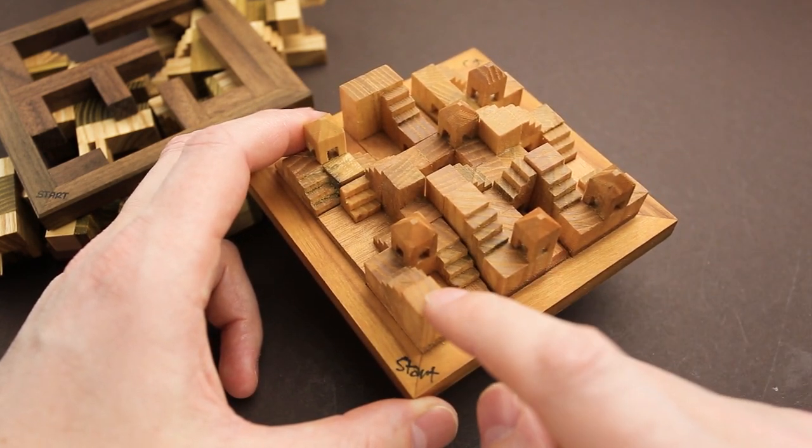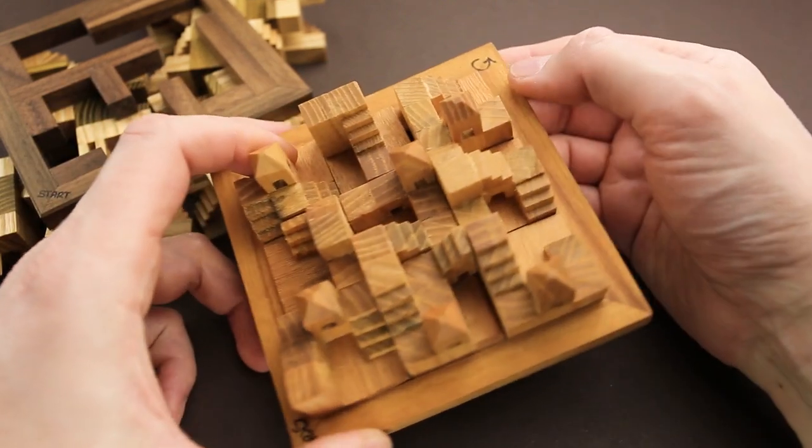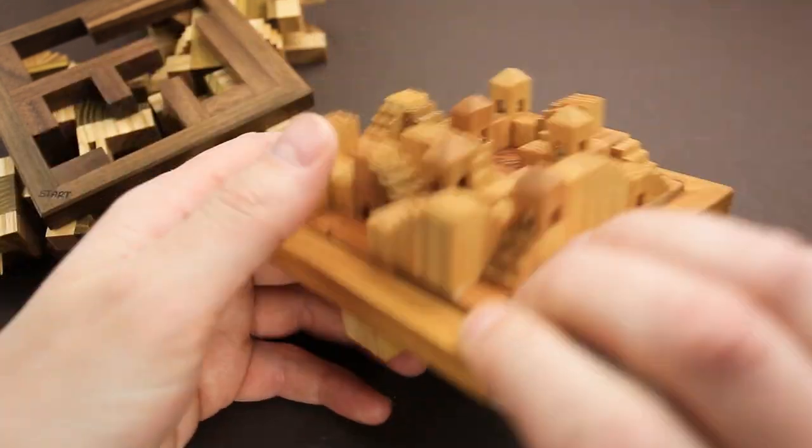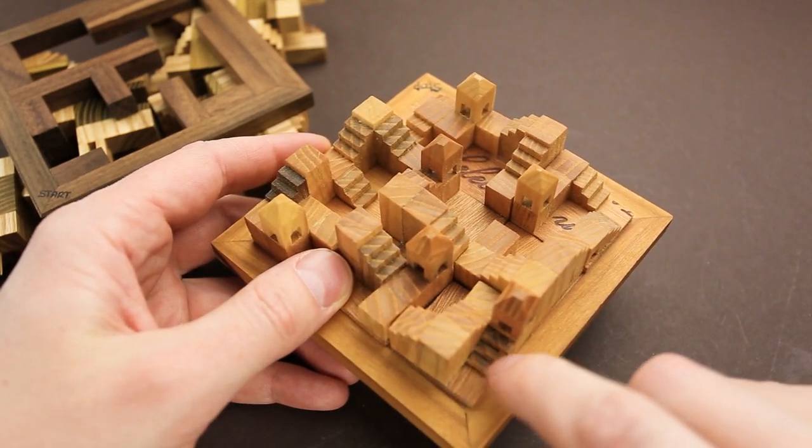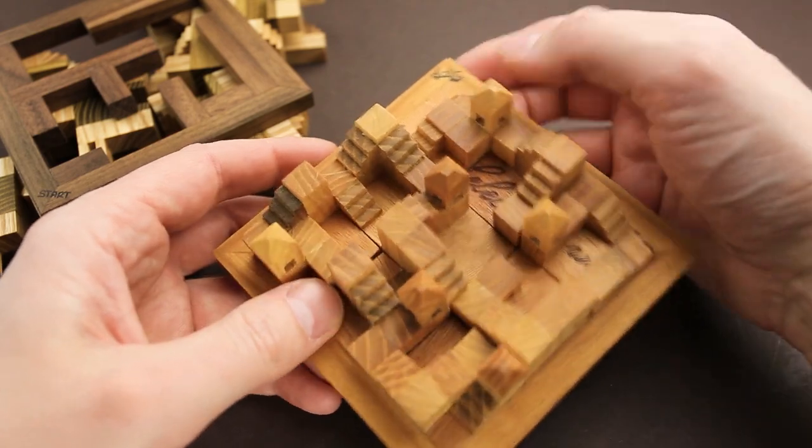So imagine that you are a tiny person and you're standing right here and you have to go from start to this arrow, then flip the puzzle and go through the walls, stairs and towers to the stop.